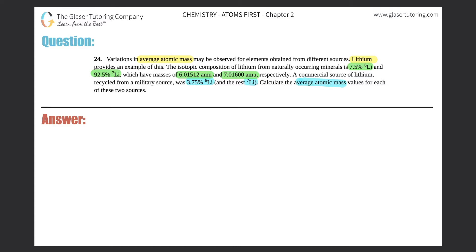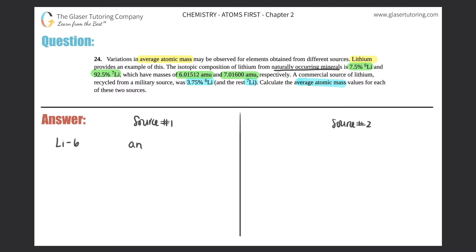It looks like we're doing the same thing twice because we have two different sources. So let's call this source number one and work on source number two after. For the first part — from naturally occurring minerals — we have lithium-6 and lithium-7. They told us the percentage of each: lithium-6 was 7.5% and lithium-7 was 92.5%.